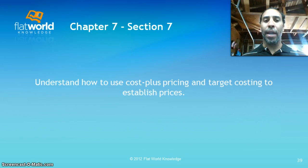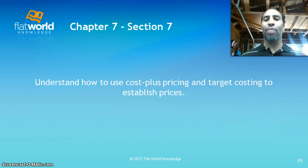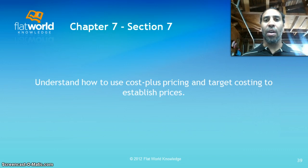This is chapter seven lecture part three, now to the finale. We'll understand how to use cost plus pricing and target costing to establish prices. This is just how companies come to their pricing conclusion. Some companies can come to pricing conclusions one way; some have to use other modes of operation.